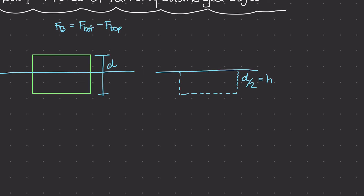Just like in the last video, on this displaced amount of water — this block right here — we have two forces: one which I'll call F sub bottom, and the top which I'll call F sub top. Both of these forces are equal to the pressure of the fluid times the area.